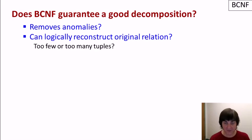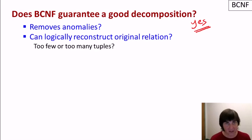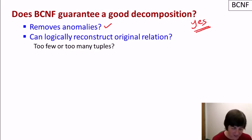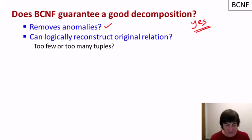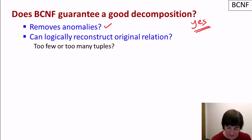Does BCNF guarantee a good decomposition? Yes — it removes anomalies by eliminating multiple instances of the same piece of information. It's also important to see why BCNF decompositions allow logical reconstruction of the original relation. We take relation R and produce R1 and R2, and we want to guarantee that joining R1 and R2 gives R back — not too few tuples and not too many.